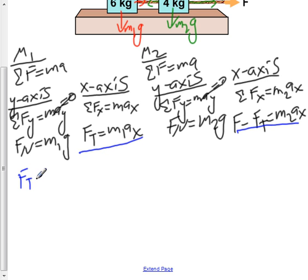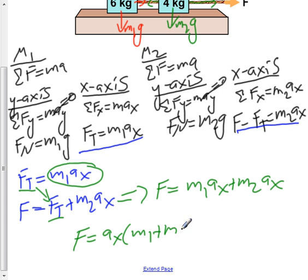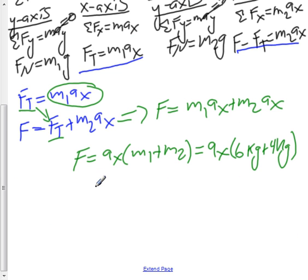Now we're going to rewrite our equations again. We have Ft is equal to m1 ax, and F, we're going to switch this around by adding F of t to both sides, giving us force of tension plus F is equal to m2 ax. Now you see here we have force of tension and force of tension, so we can simply plug in this value for the force of tension, m1 ax, into this equation here, giving us F is equal to m1 ax plus m2 ax. We can now factor out the ax, giving us F is equal to ax times (m1 plus m2). If we now plug in our values for m1 and m2, we get ax times 6 kilograms plus 4 kilograms.